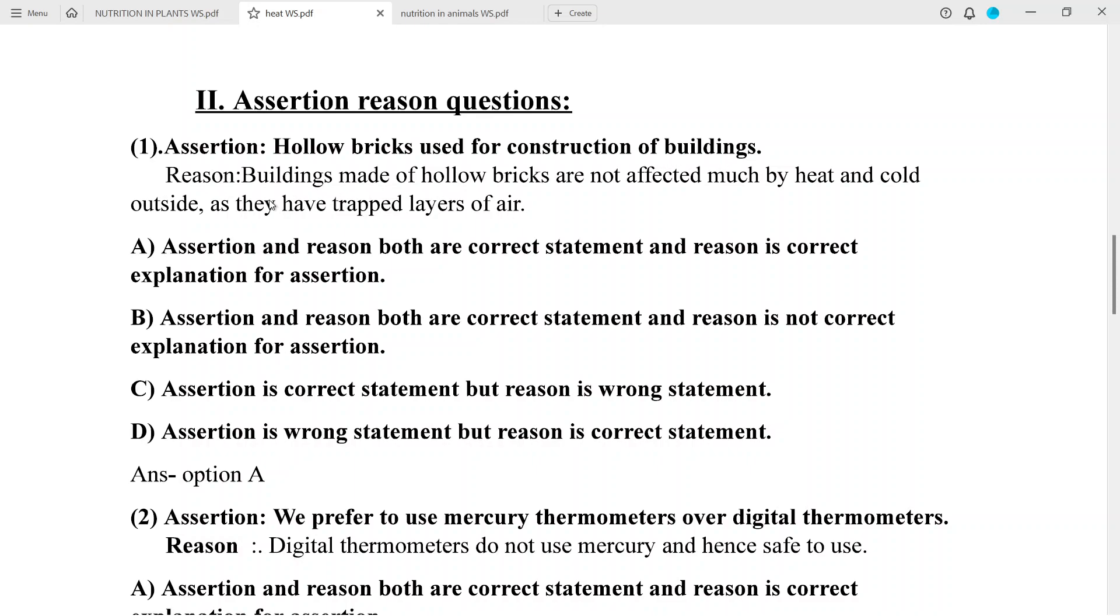Part 2, Assertion Reason questions. Number 1: Assertion - hollow bricks are used for construction of buildings. Reason - buildings made up of hollow bricks are not affected much by heat and cold outside as they have trapped layers of air. Answer A: Assertion and reason both are correct statements and reason is correct explanation for assertion.